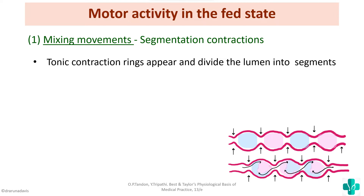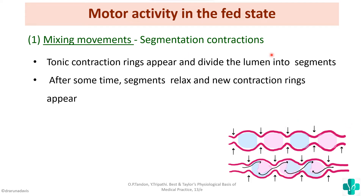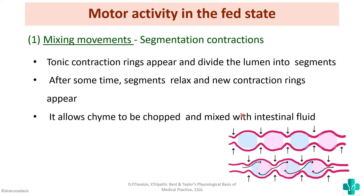In segmentation contraction, a tonic contraction ring appears and divides the lumen into segments — that is why it is called segmentation contraction. After some time the segments relax and new contraction rings appear. This allows the chyme to be chopped and mixed with the intestinal fluid.